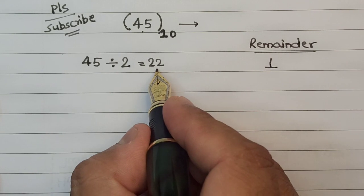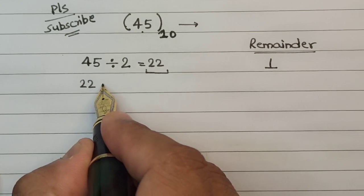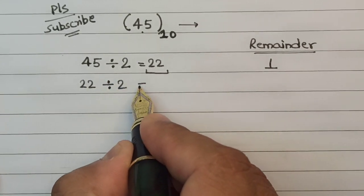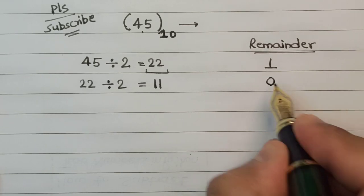Similarly, we keep on successively dividing the quotient by 2 again. In the next step we divide 22 by 2, which gives us the quotient as 11 and the remainder as 0.